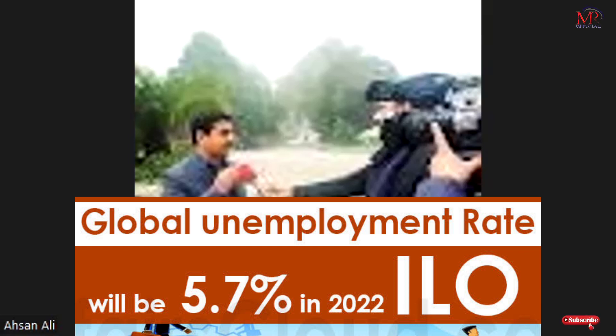Looking at political causes, there is misgovernance, corruption, feudal power structure, educational apartheid, segregation in the education sector, bad governance, political instability, and energy crisis. These are the major political causes of unemployment in Pakistan.